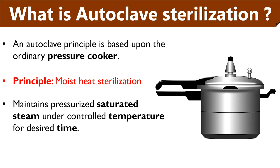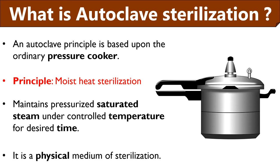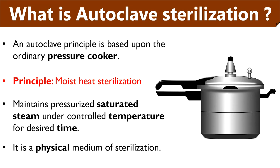The steam pressure and temperature may vary depending upon the size and quantity of the loads. Autoclaving is a physical means of moist heat sterilization that is the most dependable method over chemical, radiation and gas sterilization methods.